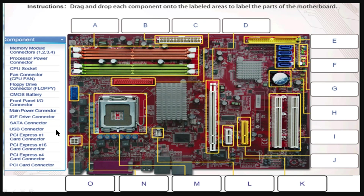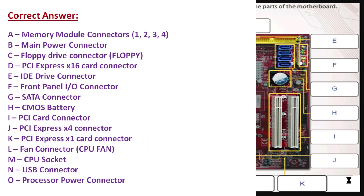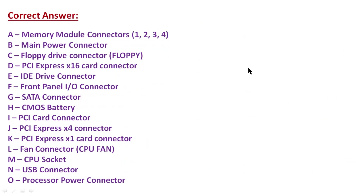You have to select the correct component for each label area. Let's check the correct answers for this simulation. For label area A, you have to select memory module connectors 1, 2, 3, 4. In B, select main power connector. In C, select floppy drive connector. In D, select PCI Express X16 card connector. In E, select IDE drive connector. In F, select front panel input/output connector.